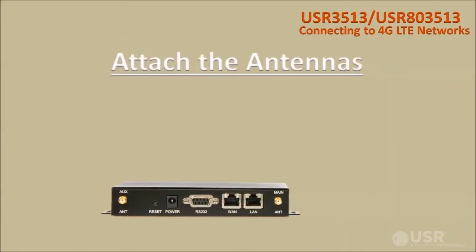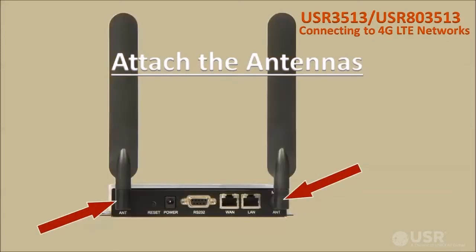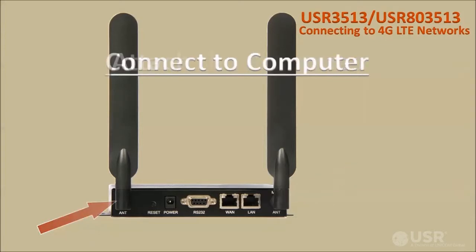To get connected, first attach the two antennas that are included with the gateway to the SMA connectors on the gateway's rear panel. Then use an Ethernet cable to connect the gateway's LAN port to the computer.